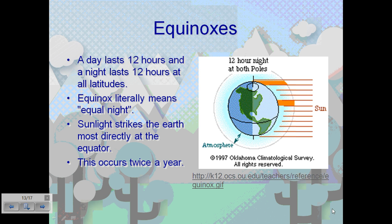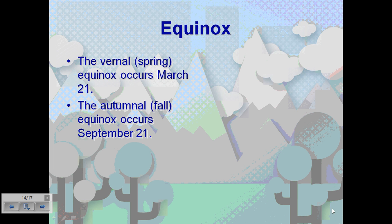Now, equinoxes — or equinox — which literally means equal night. A day lasts 12 hours and a night lasts 12 hours at all latitudes, which explains why it means equal night. During equinoxes, sunlight strikes the Earth most directly at the equator. This occurs twice a year. The vernal equinox occurs on March 21st, which is soon approaching. The autumn fall equinox occurs on September 21st.